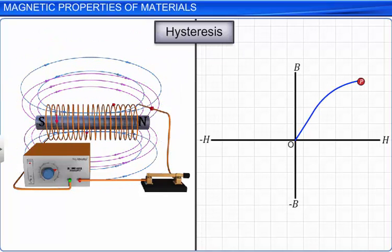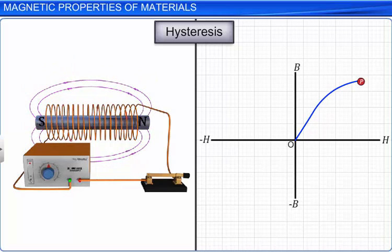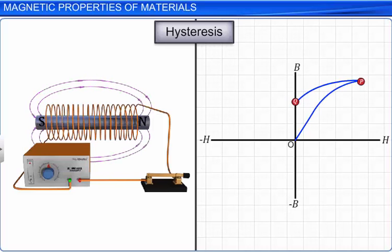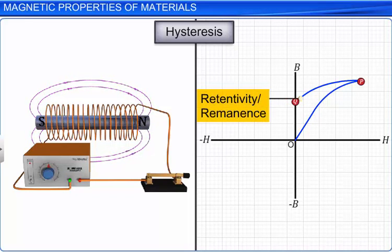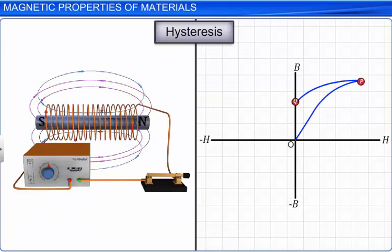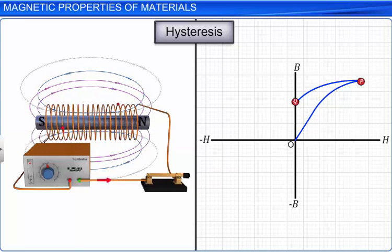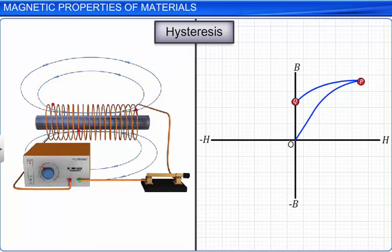By reducing the current through the solenoid, the applied magnetic field H decreases to zero. When H is equal to zero, the magnetic field strength B in the ferromagnetic material is not equal to zero; this is represented by the curve PQ in the graph. The value of B at H equal to zero is called retentivity or remanence. Now, increasing the current in the reverse direction causes certain domains in the ferromagnetic material to flip until the net field inside it is nullified; this is represented by the curve QR in the graph. This magnitude of applied magnetic field H is known as coercivity.